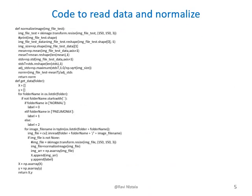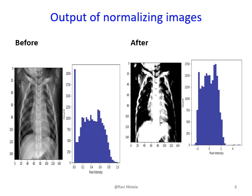This slide shows the code used to load the data into arrays. Normalization is being applied when loading the data from the folder location into an array. The next slide shows the output after normalization, and we can compare the images before and after normalization. The pixel intensity has changed before and after normalization.